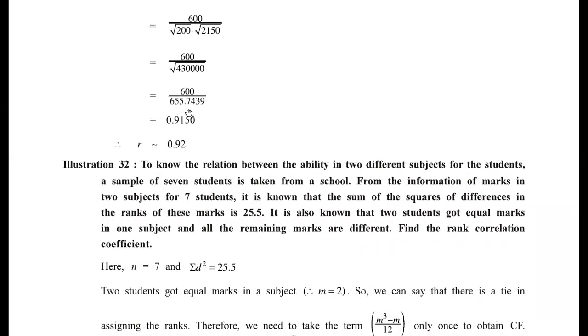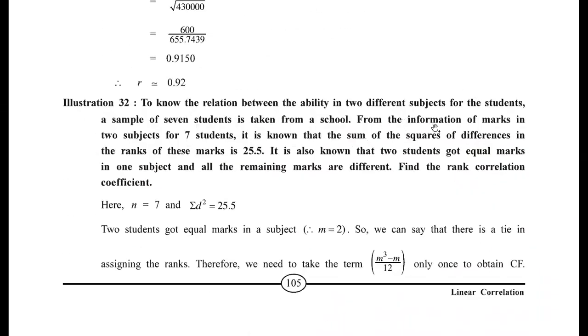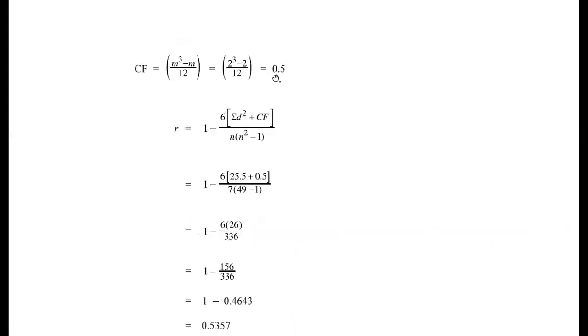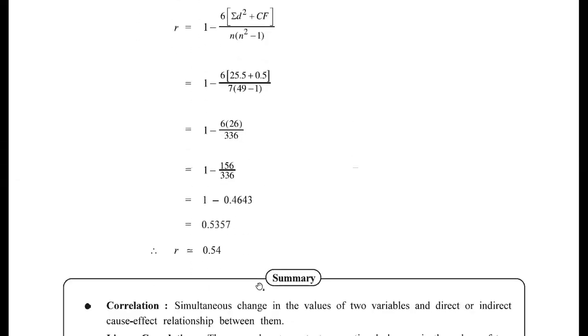With n = 7, Σd² = 25.5, and CF = 0.5, replace values in the second formula: R = 1 minus 6 into (Σd² + CF) upon n(n²−1) = 1 minus 6 into (25.5 + 0.5) upon 7 into (49−1). Performing the calculation gives R = 0.54.